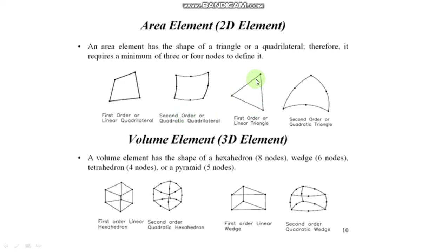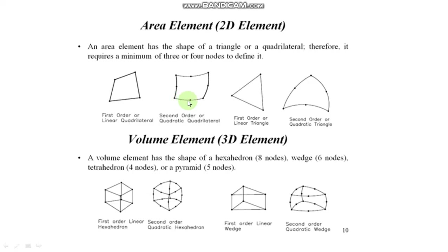For triangular shape, there are three nodes at the corners, and for quadrilateral elements there are four nodes at its corners. For the quadratic triangular element, there is an additional node at the middle of each side, so quadratic triangular element has a total of six nodes. Similarly, for the quadratic quadrilateral element, there are additional nodes at the middle of the sides, so the quadratic quadrilateral element has a total of eight nodes.